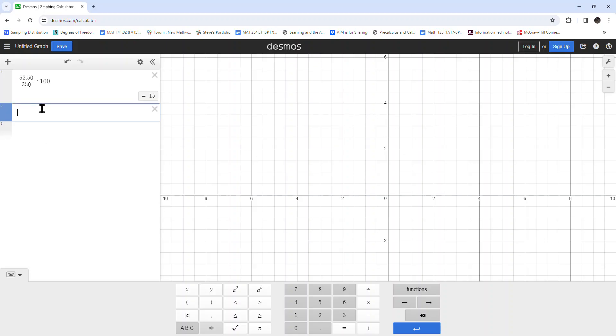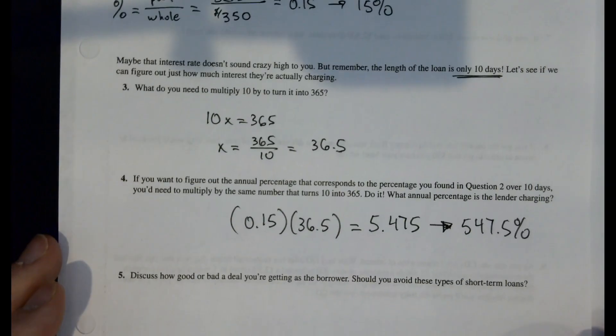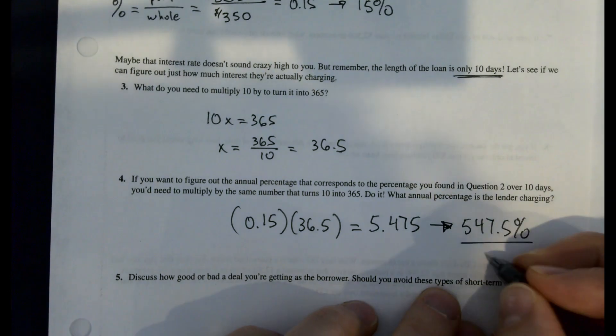Let's scamper over to Desmos and do that. So that equals 5.475, that's the decimal version. If we multiply that times 100, we end up with the annual interest rate that we're being charged. 547.5% interest. Now, that is crazy high.